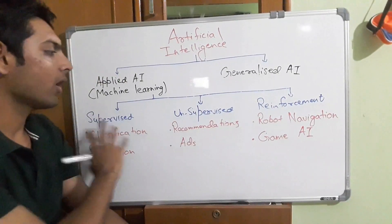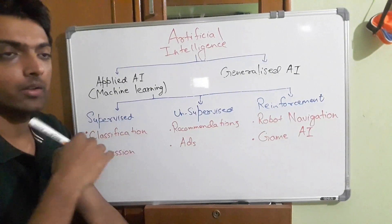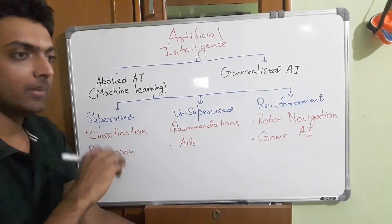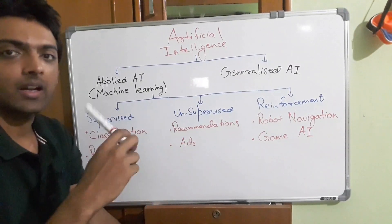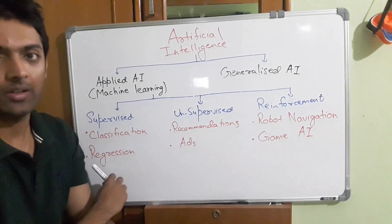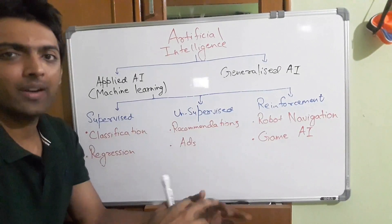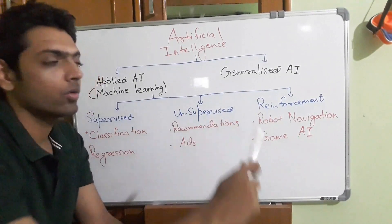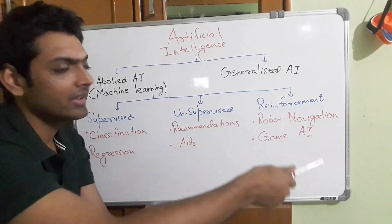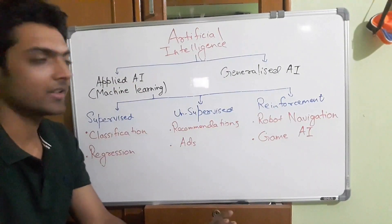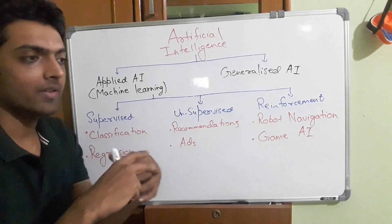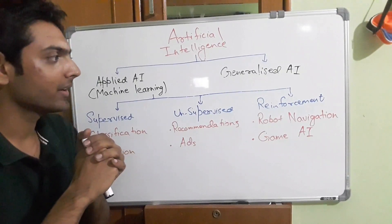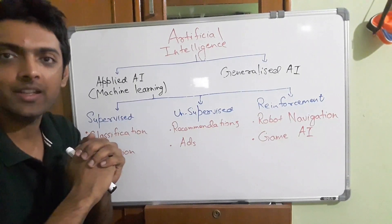So now you can see all three sectors together. Supervised learning covers object classification, handwriting classification, and regression like economic trend forecasting. Unsupervised learning covers big data, recommendations, and ads — as Google is already using. Reinforcement learning covers robot navigation and game AI. This is the whole segment of artificial intelligence. If you have any questions, let me know in the comments and I'll clarify. Thank you for watching — see you in the next video.